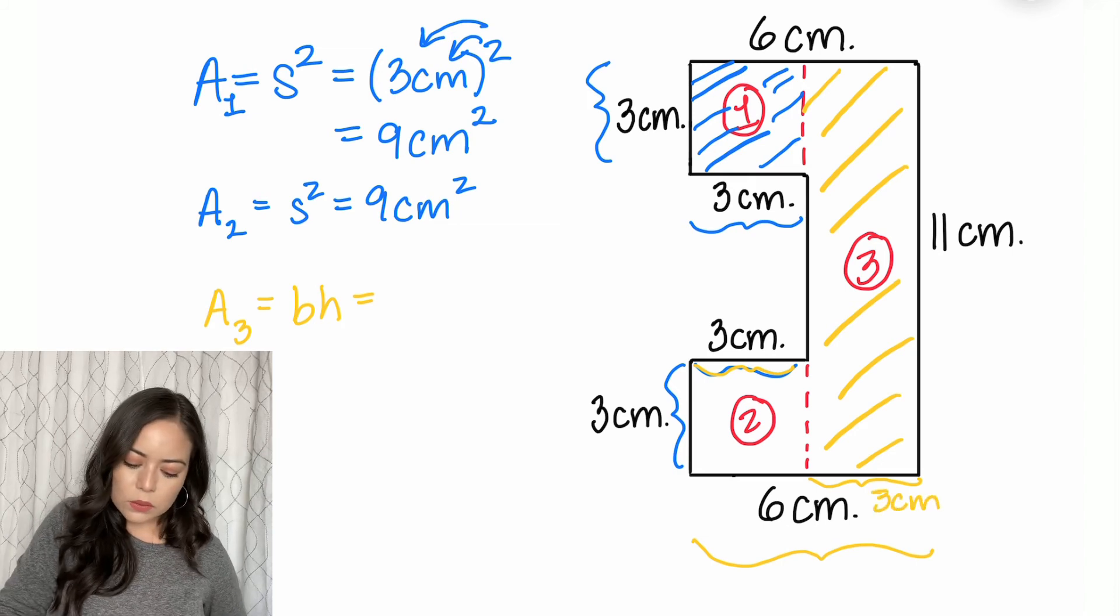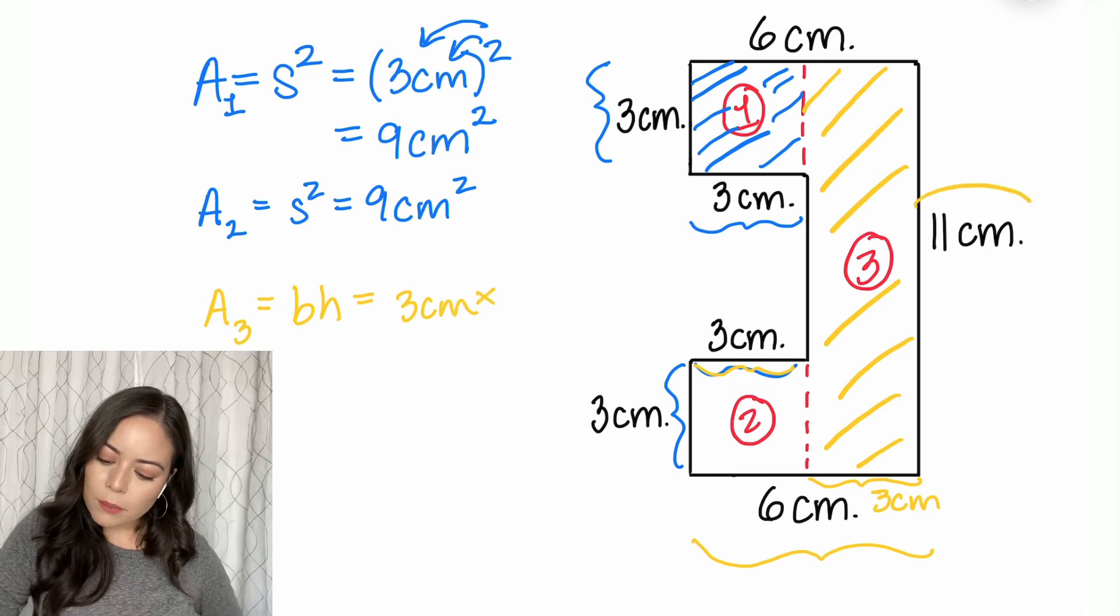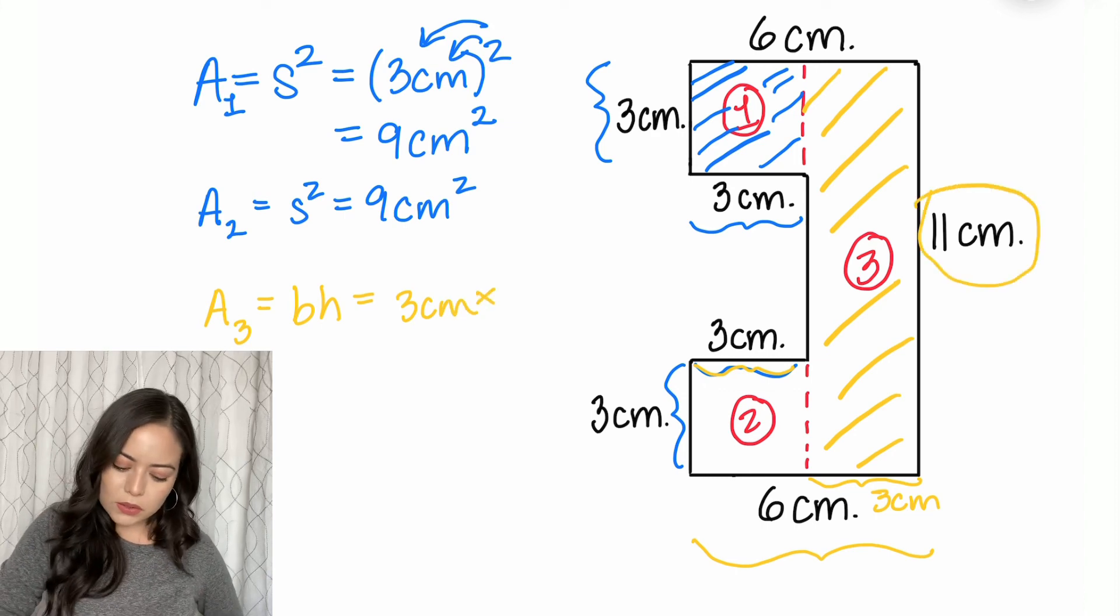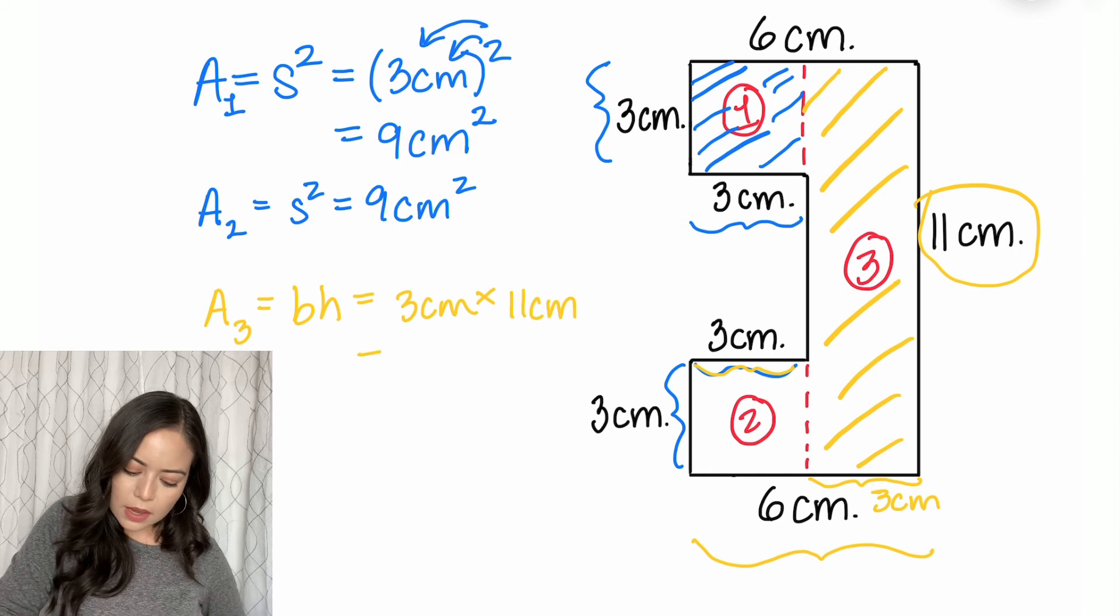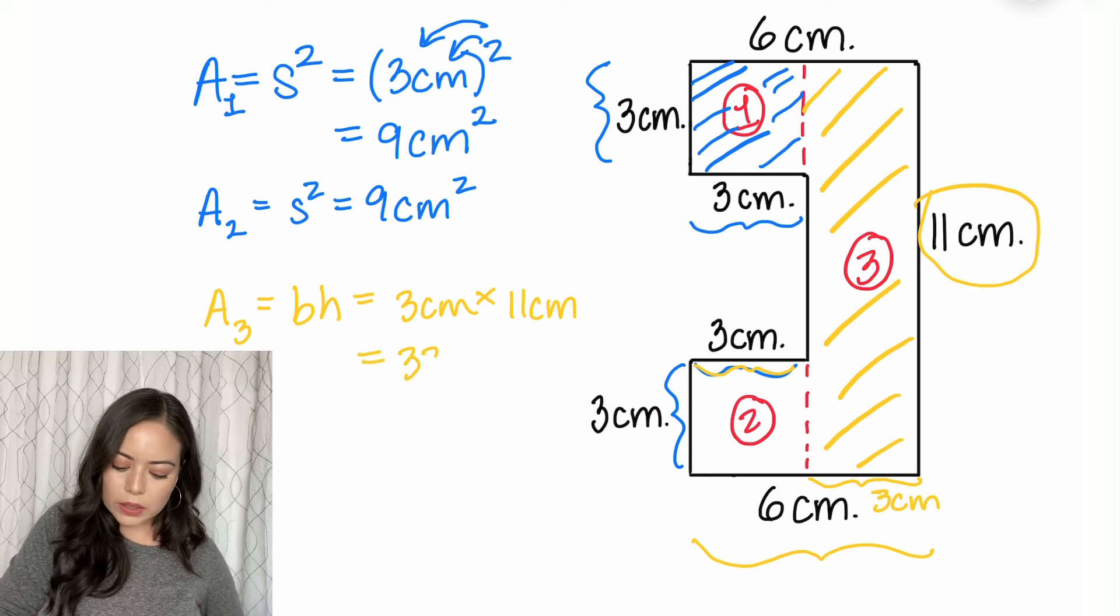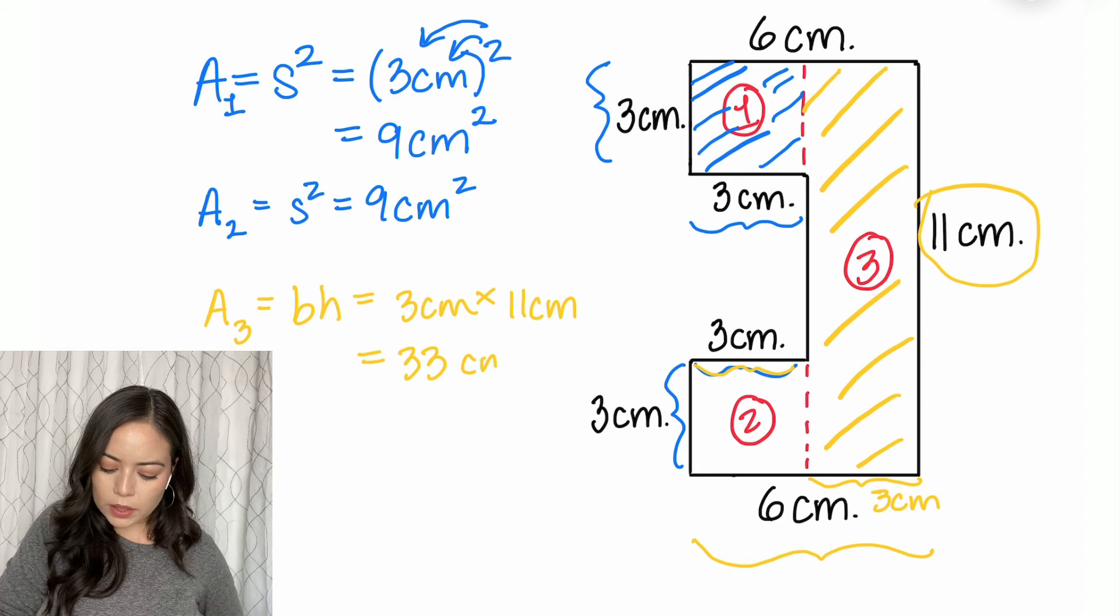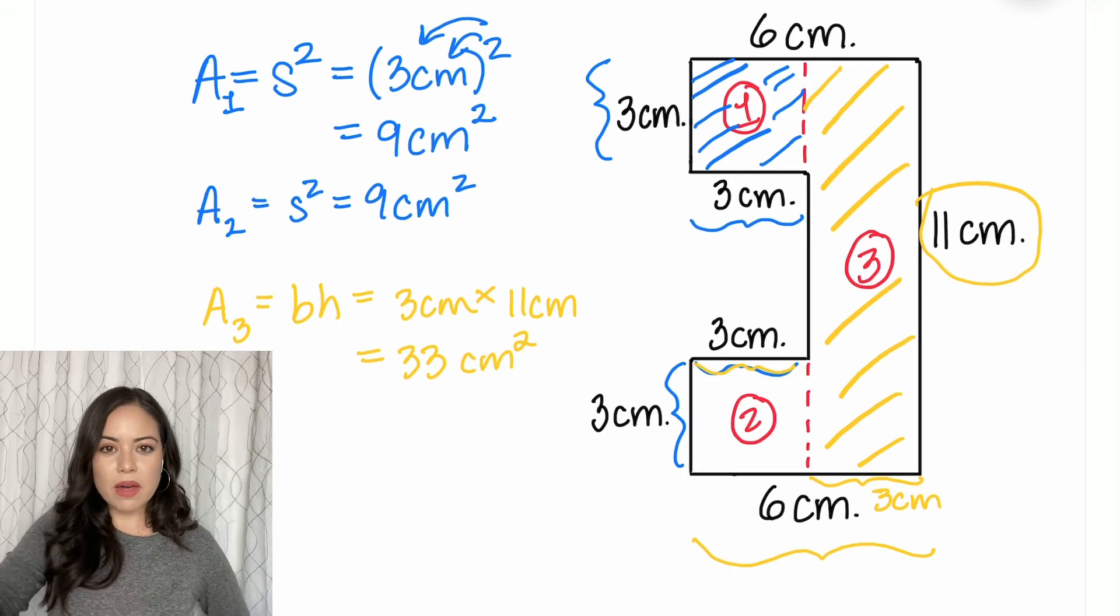So the base is three centimeters. The height is really simple. It's 11 centimeters. And three times 11 is 33. Centimeters times centimeters is centimeters squared. So we have the area of that portion.